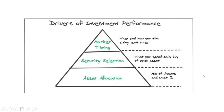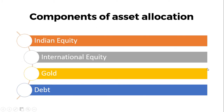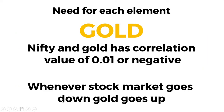This series is for anyone planning to make good investments or savings for retirement. The components of asset allocation are Indian equity, international equity, gold, and debt. We'll start with gold, which gets the smallest weightage in a portfolio. Nifty and gold have a correlation value of 0.01 — when nifty goes down, gold goes up drastically. In March during COVID, gold reached an all-time high while nifty fell to half its value.